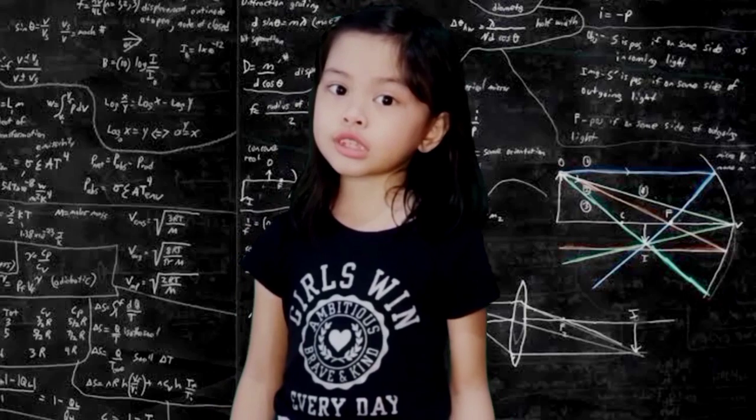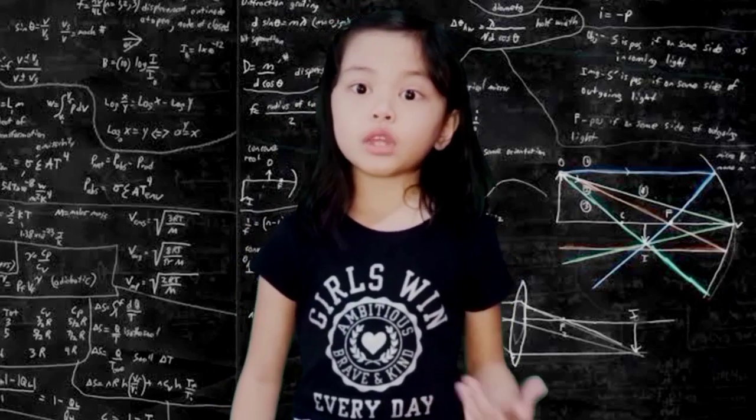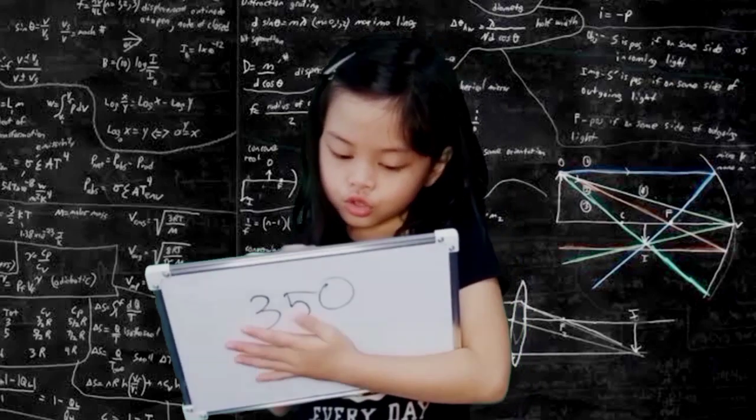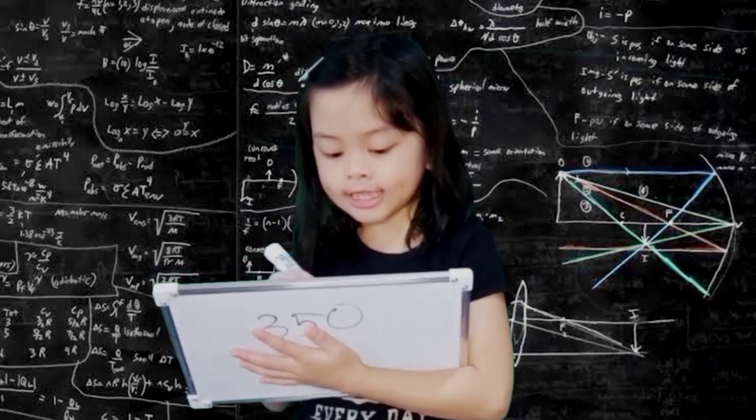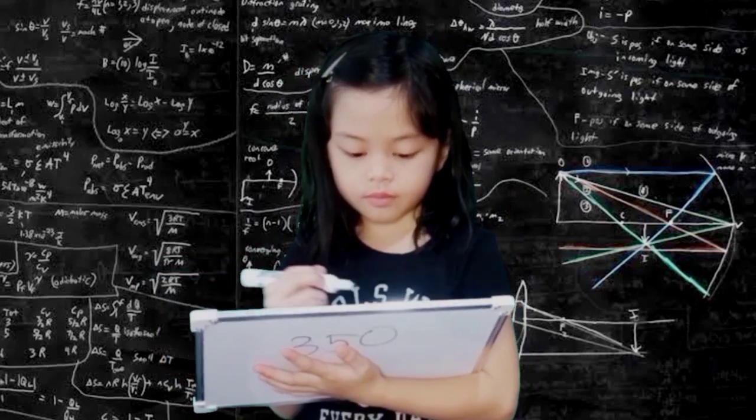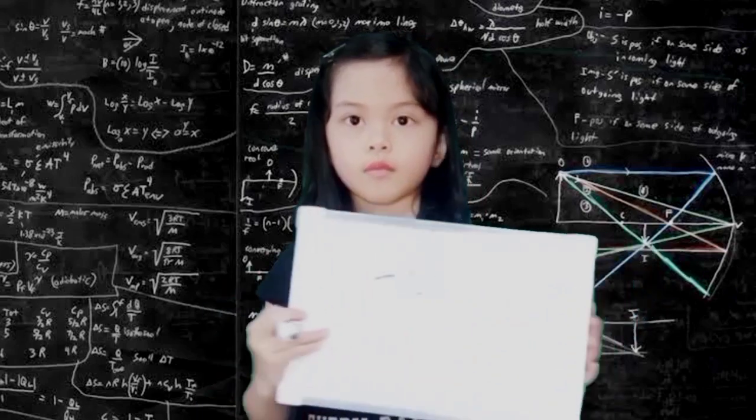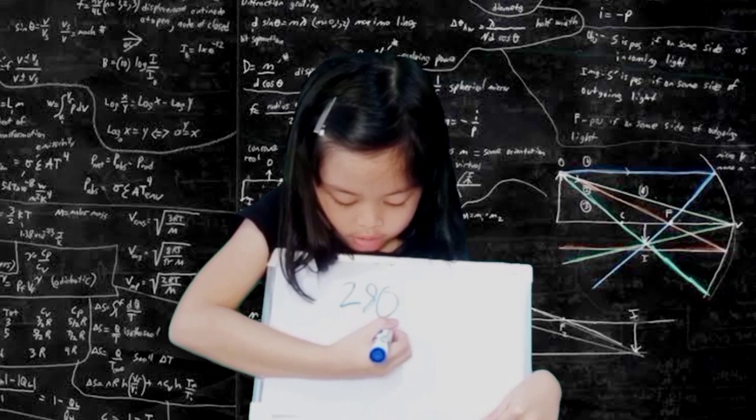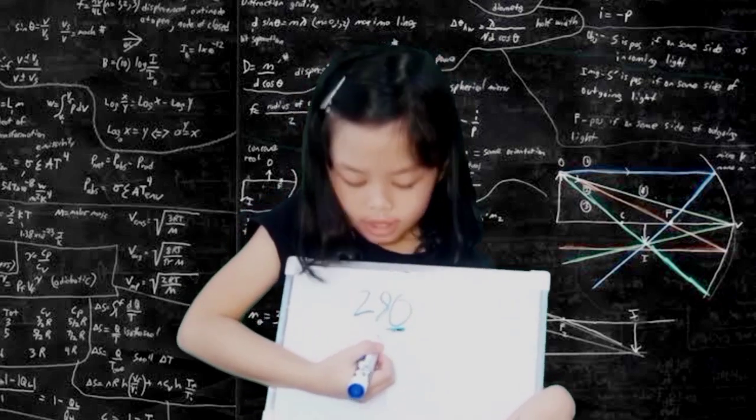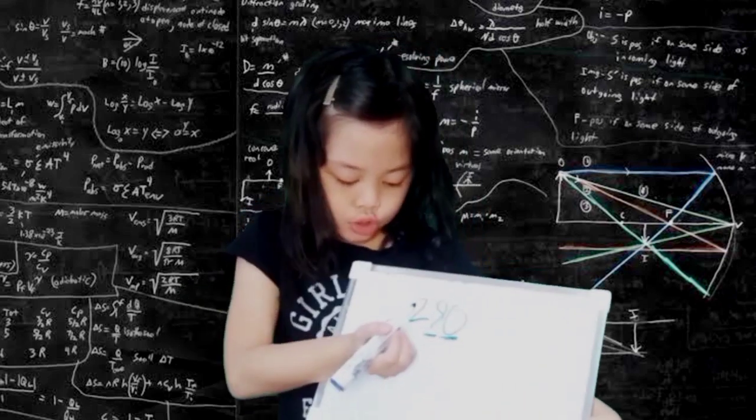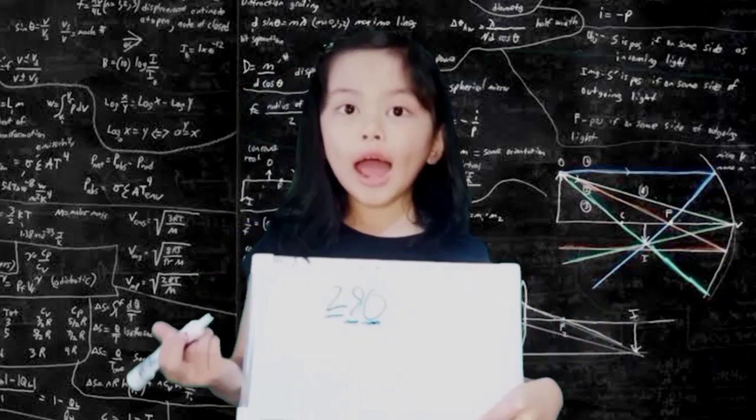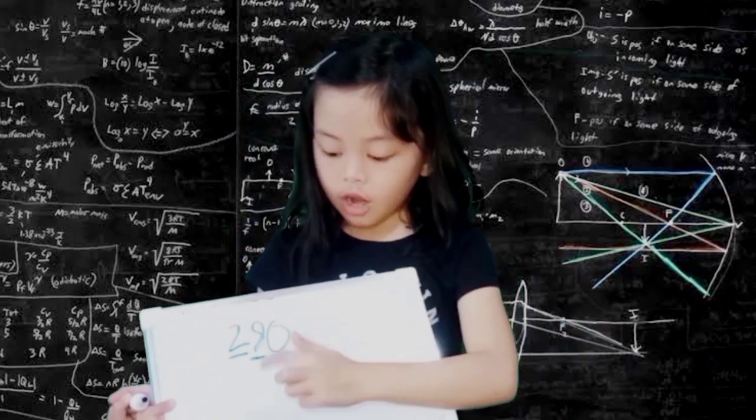To understand even better, we need another example. I know. 280. The zero is the ones, and the eight is the tens, and also the two is the hundreds.